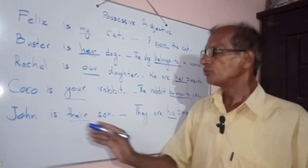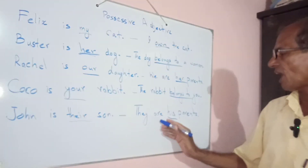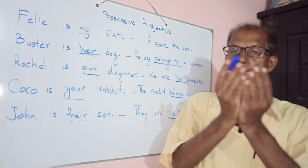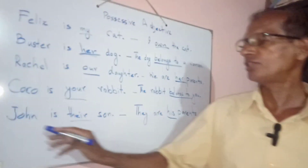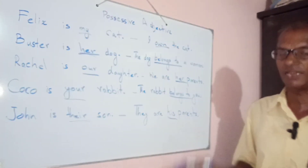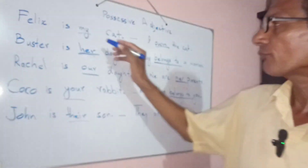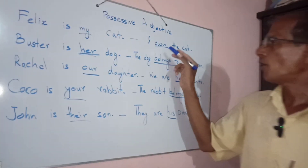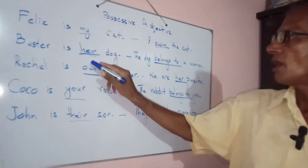John is your son. John unka beta hai. They are his parents — wo unke parents hain. So 'his' — why? Because John is a boy. That's why here we use 'his'.